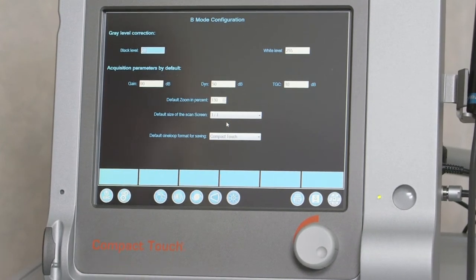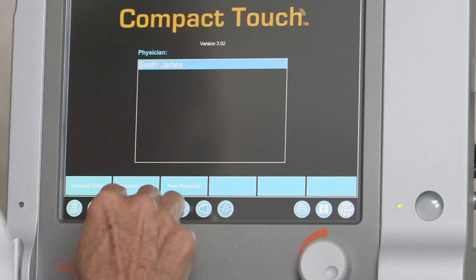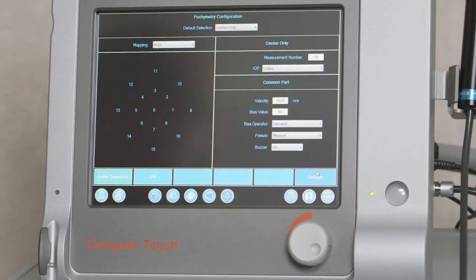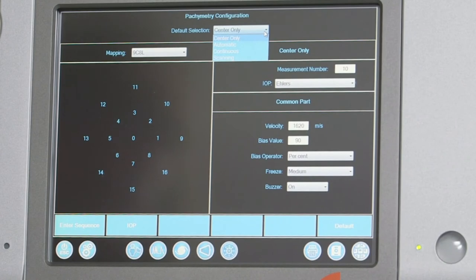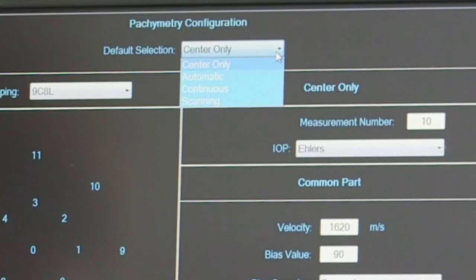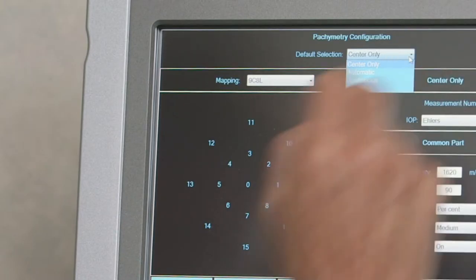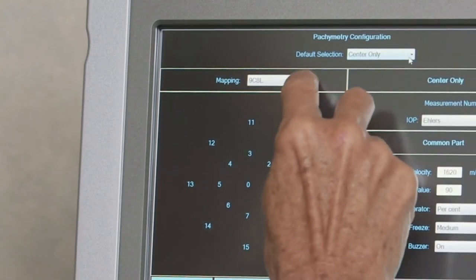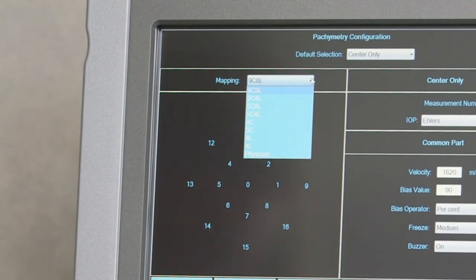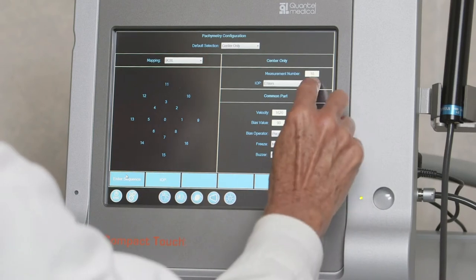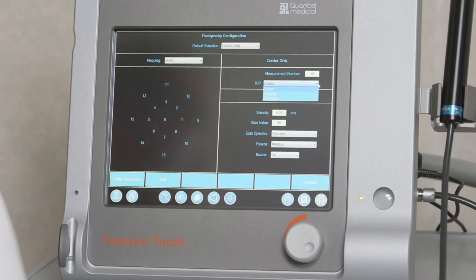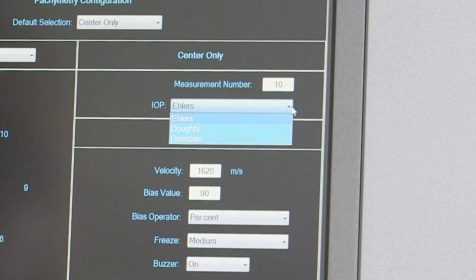Selecting Pachymetry Setup opens the Pachymetry Configuration screen. The Default Selection field allows the examiner to specify the default layout of the Pachymetry Acquisition screen. Four acquisition modes are available – Center Only, Automatic, Continuous, or Scanning. The examiner can also choose from eight predefined mapping sequences using the Mapping pull-down menu. Alternatively, a custom mapping sequence can be created by selecting Enter Sequence from the bottom toolbar. The Compact Touch software provides three correction tables for adjusting IOP – Ehlers, Doty, and Dreszner – all of which can be viewed by selecting IOP on the right-hand side of the screen.